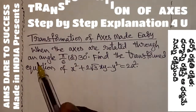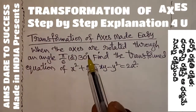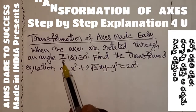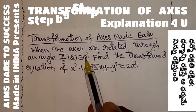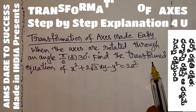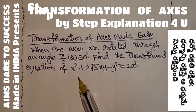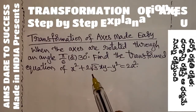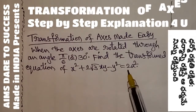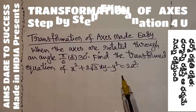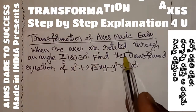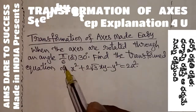Directly, the question is: when the axes are rotated through an angle 5π/6 — 5π/6 means 180/6 is 30 degrees — find the transformed equation of x² + 2√3·xy − y² = 2a². This is the question, and it is related to rotation through an angle.